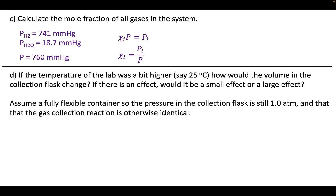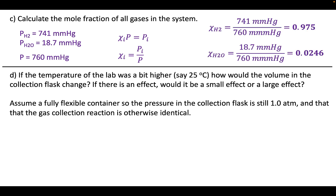We divide both sides by P and see that the mole fraction — a fraction between 0 and 1, not a percentage between 0 and 100 — equals the partial pressure of the species divided by the total pressure. We can calculate the mole fractions for both hydrogen and water by taking their partial pressure divided by the total pressure, and we see it's about 97.5% H₂ and about 2.5% water vapor. Based only on the partial pressure, which we determined from the vapor pressure and total pressure, we now know the composition of this system.